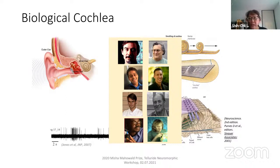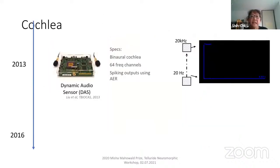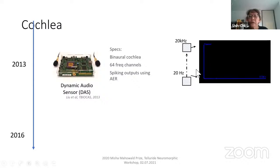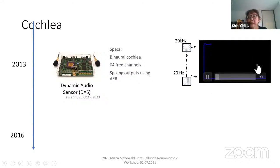Before I show the dynamic audio sensor board, I want to acknowledge Corbena, who developed a lot of the AER circuits that we use on our chips, and also Toby, who developed the hardware infrastructure for the DBS, which we then mapped onto the dynamic audio sensor — the DAS, as we call it. Here's the DAS in 2013. You can see it here in this package, with two microphones coming in. The specs: it's a binaural cochlea, 64 frequency channels. You can record the spikes that come out of the cochlea, with channels ranging from 20 to 20 kilohertz.